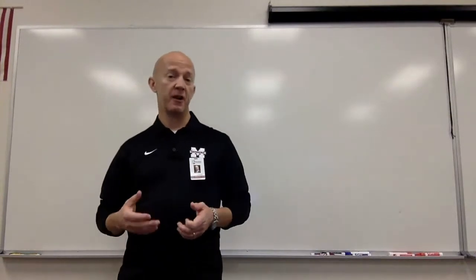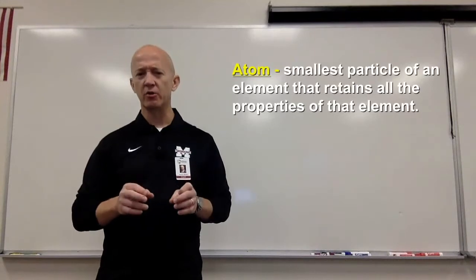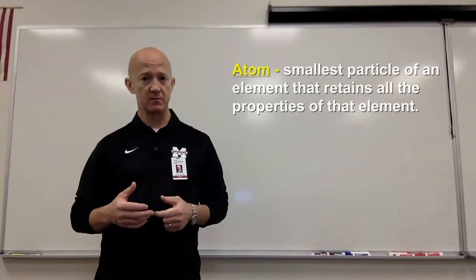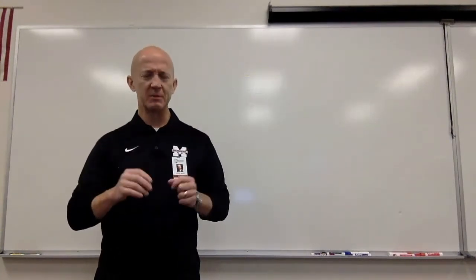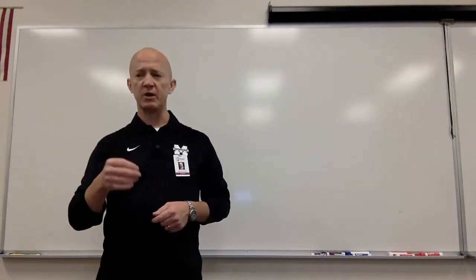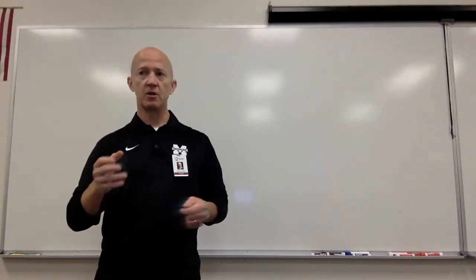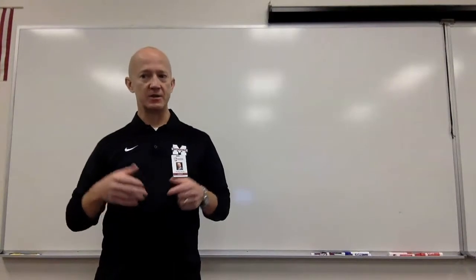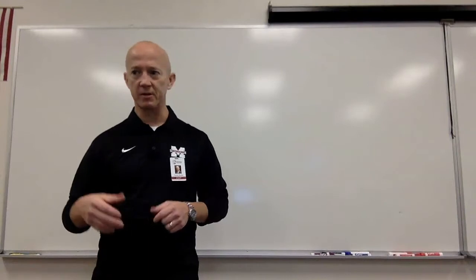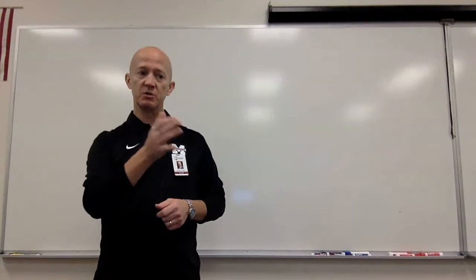How, then, do we define the atom? Well, an atom, simply put, is the smallest particle of an element that still retains all the properties of that element. Later on, we'll talk about what we call subatomic particles — things like protons, neutrons, and electrons — but those things don't actually retain the properties of the element in which they're present. The atom does. So a gold atom has all the properties of gold and not silver. A carbon atom has all the properties of carbon and not, say, fluorine. Each one is specific to its particular element.